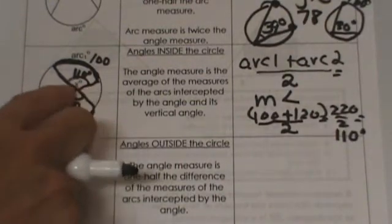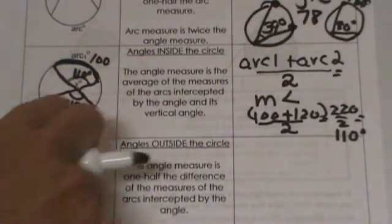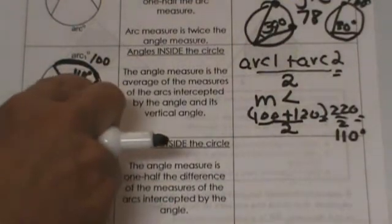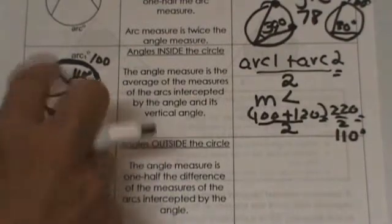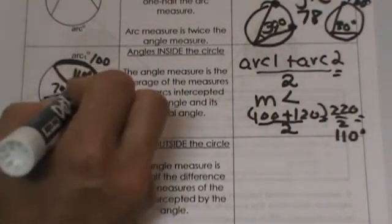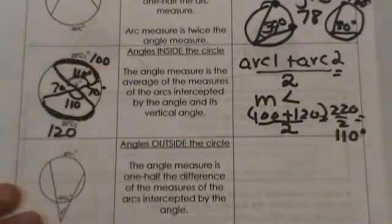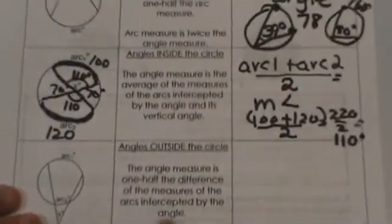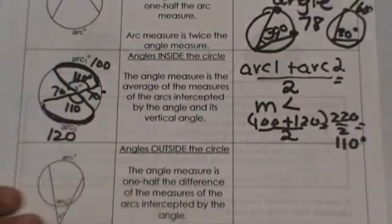What do we know about these angles? If this one is 110 and we have a straight line here, aren't these two supplementary? If this is 110 I can subtract it from 180 and get this side. This side would be 70 and we know these are vertical so that side would be 70. The main concept here is to find these angles you add and divide by 2.